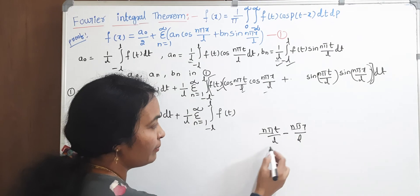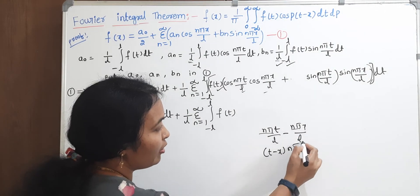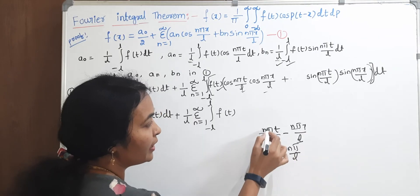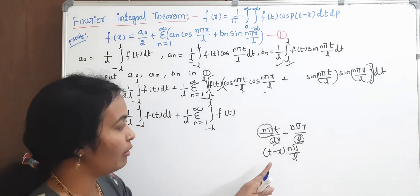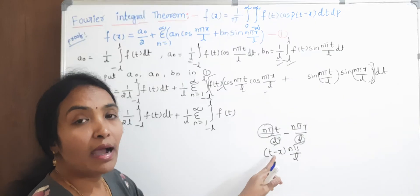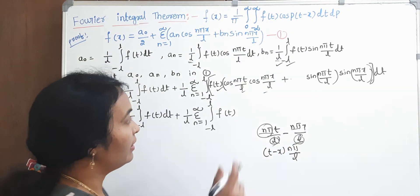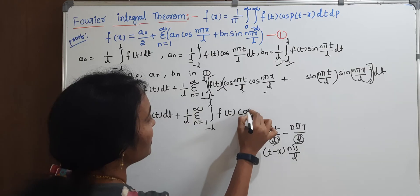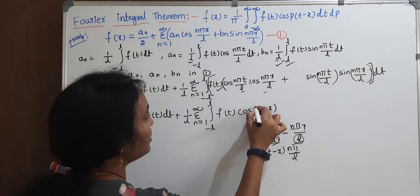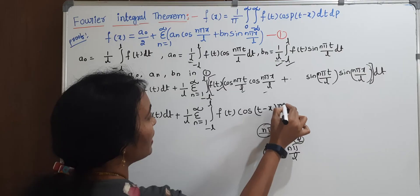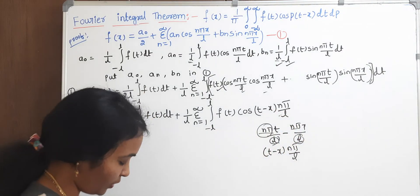Writing a minus b: taking n·pi common and l common, it becomes cos of (t minus x) times n·pi / l. So cos(a minus b) is cos[(t minus x) · n·pi / l].